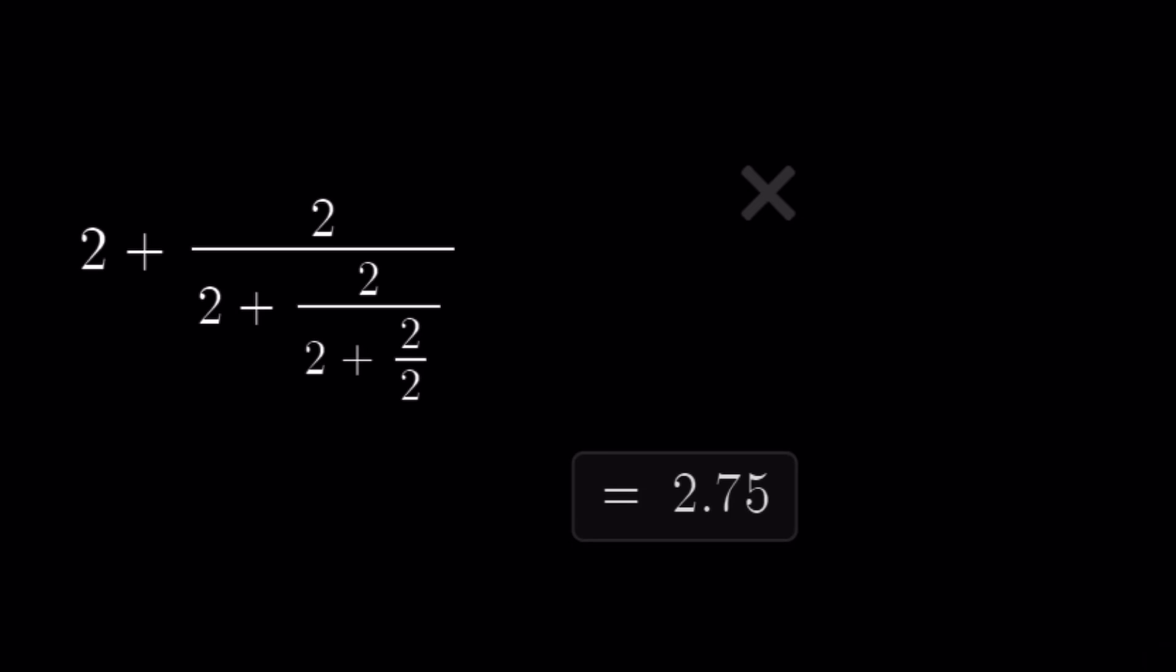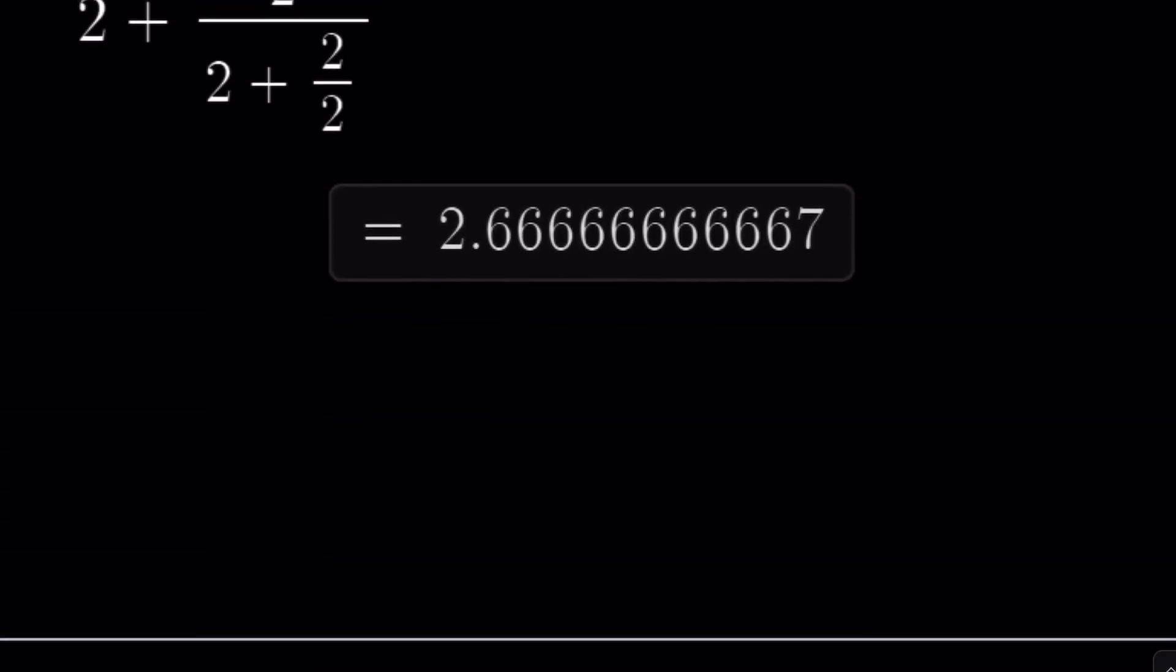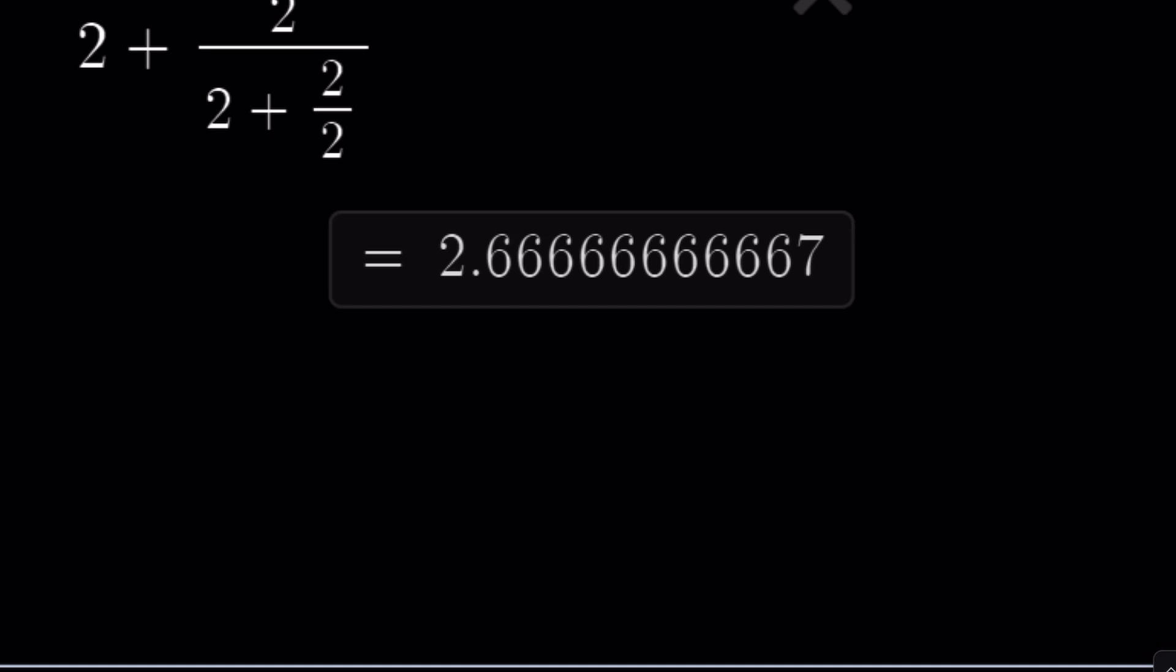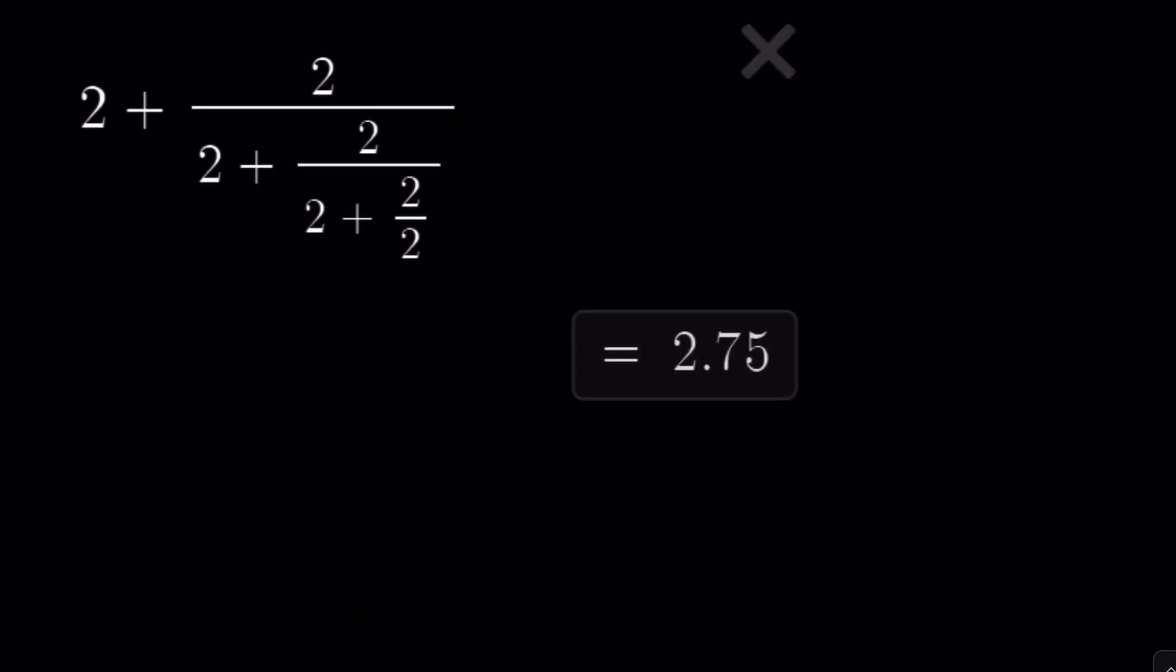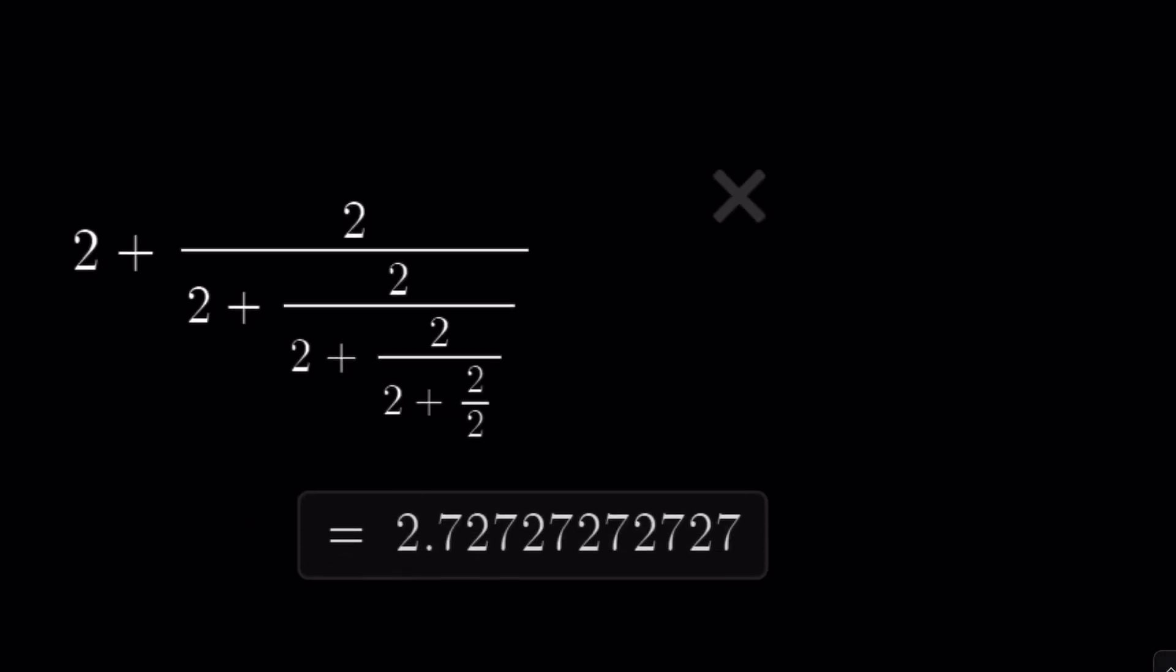Now, here's the thing. The values started with 2, remember? And then we went to 3. And then we kind of went through 2.6. So, it went up and then it went down and it went up again. Is it going to keep going up or is it going to oscillate? That's a good question, right?